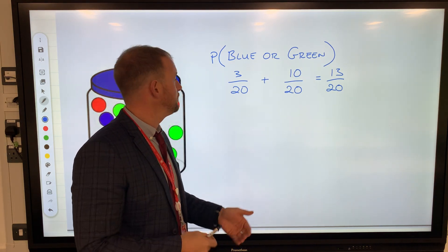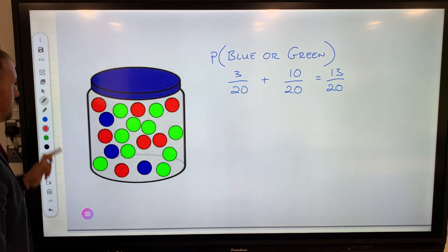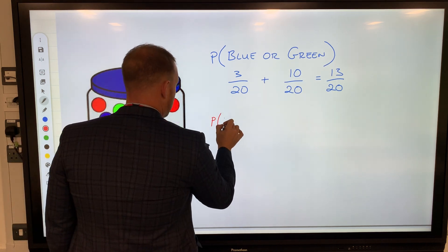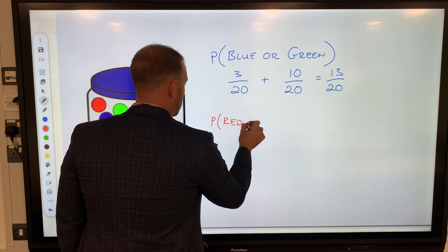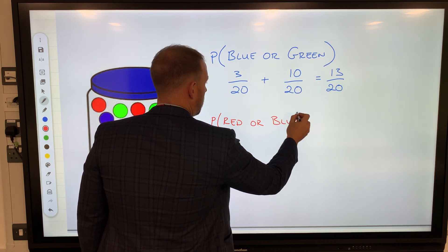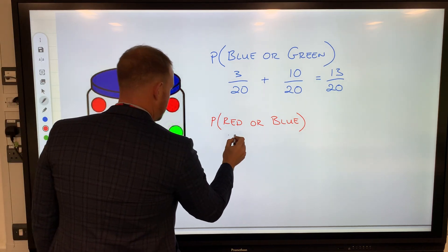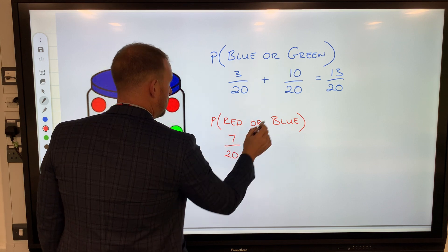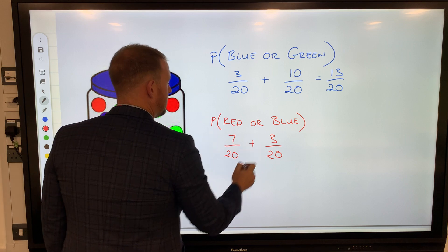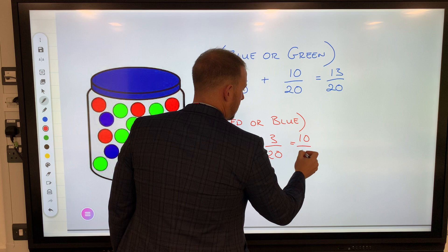Probability of selecting red or blue: red we've got seven out of 20, blue we worked out to be three out of 20. So the probability of selecting red or blue would be 10 out of 20.